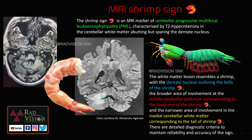The Mrs. Shrimp sign is classically seen as a marker of cerebellar progressive multifocal leukoencephalopathy, where there will be T2/FLAIR hyperintensity in the cerebellar white matter abutting the dentate nucleus but sparing the dentate nucleus. The different parts of this shrimp are: the dentate nucleus outlines the belly of the shrimp, whereas the broader area of involvement in the middle cerebellar peduncle corresponds to the head of the shrimp.